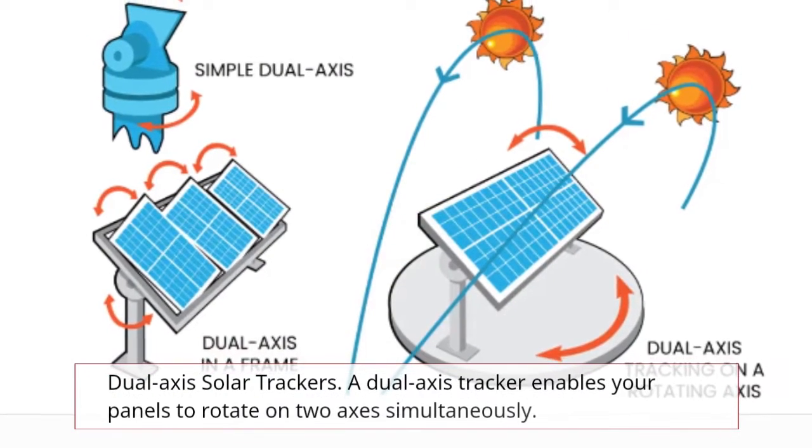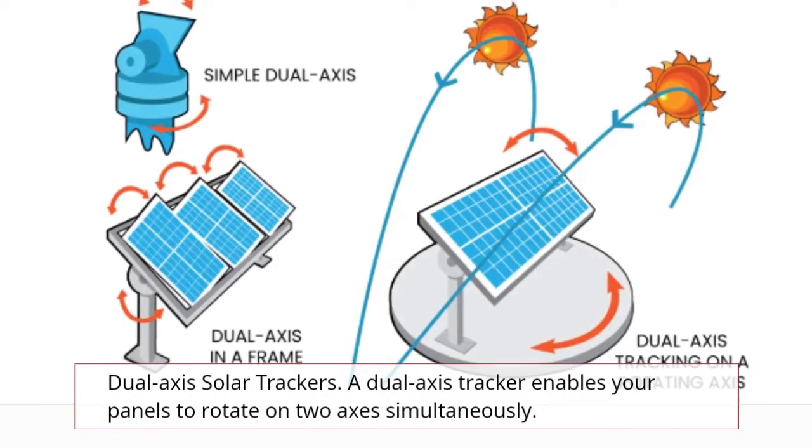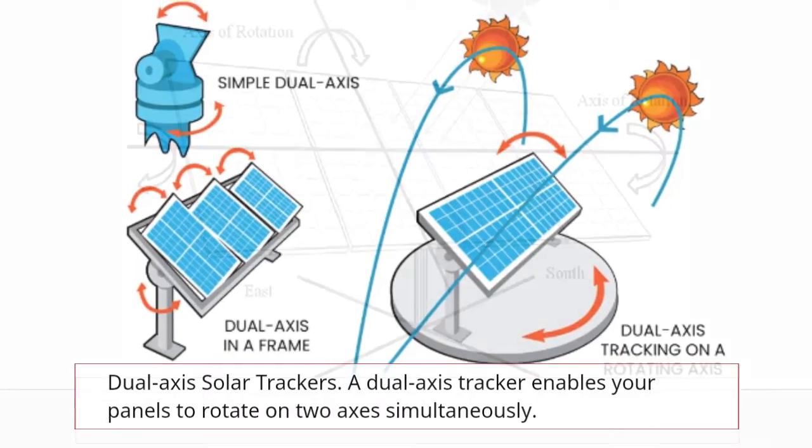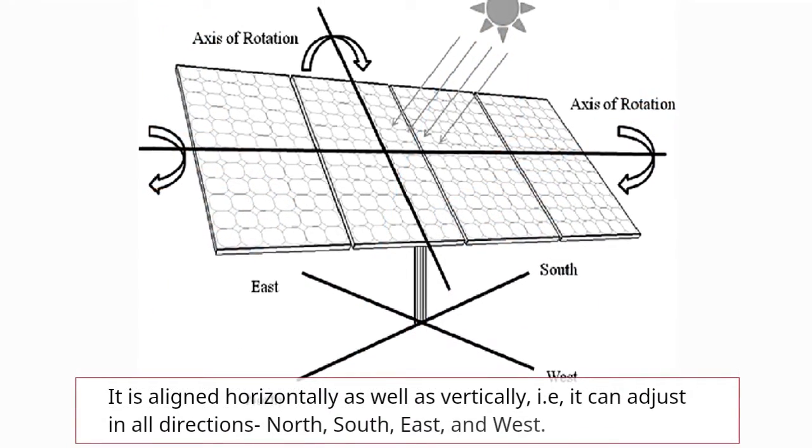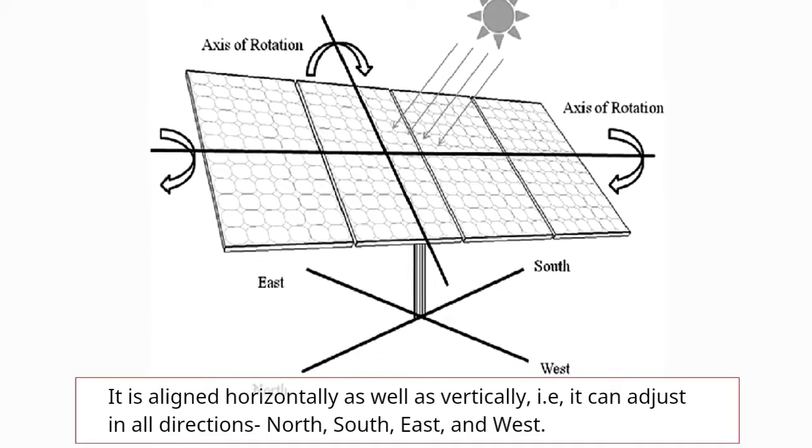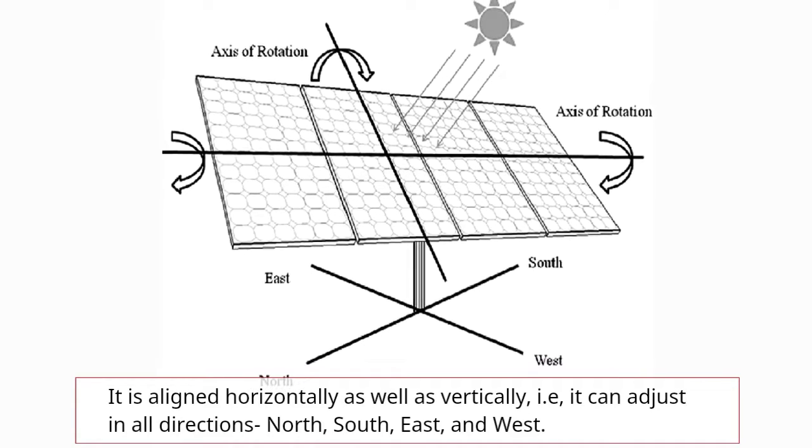Dual axis solar trackers enable your panels to rotate on two axes simultaneously. It is aligned horizontally as well as vertically, meaning it can adjust in all directions: north, south, east and west.